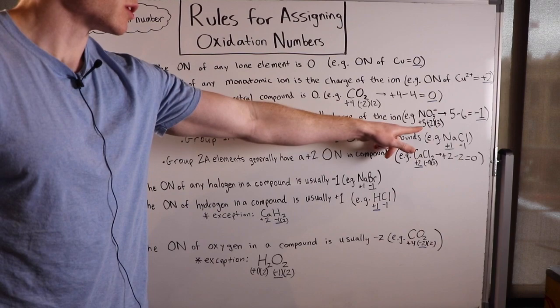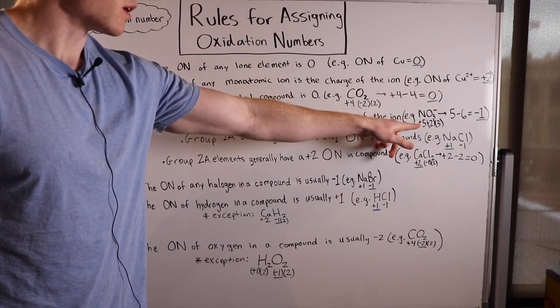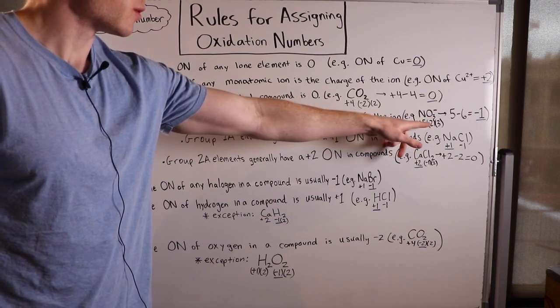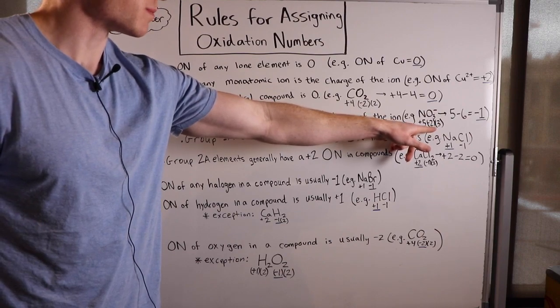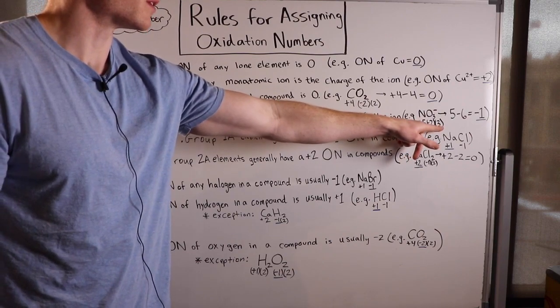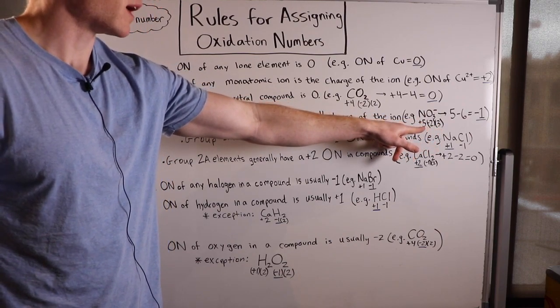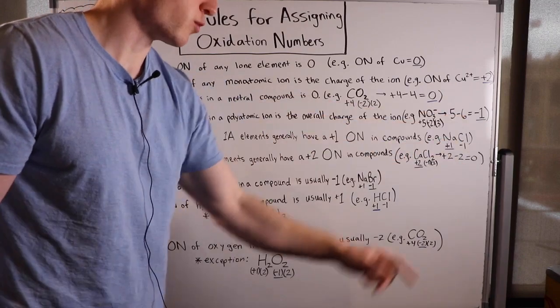So here, the oxidation number of nitrogen is plus five, whereas the oxidation number of oxygen is minus two, and there are three of them. So plus five minus six is negative one, and that rule holds true.